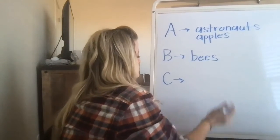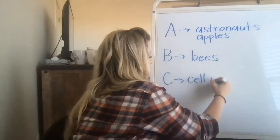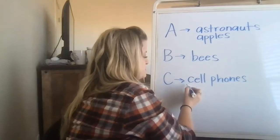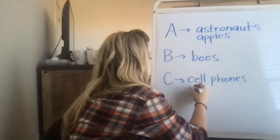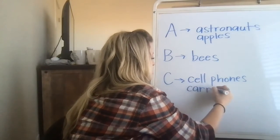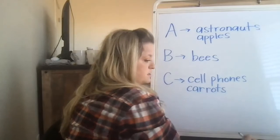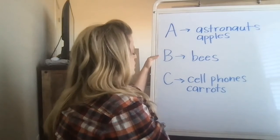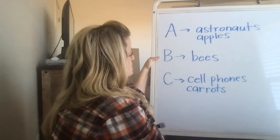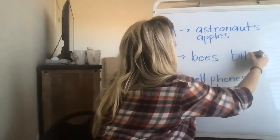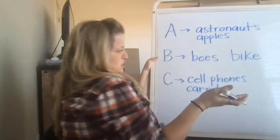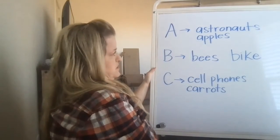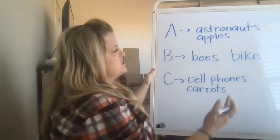C could be — you could wonder about cell phones. That's a soft C. Or carrots — that's a hard C. Maybe you wonder about your bike and how does it work? Who invented a bike? Who invented cell phones? How did we find out carrots could be eaten? These are just things you wonder about.